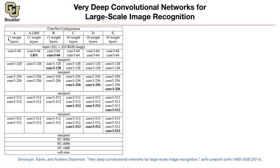They started with 11 layers — that's configuration A. The input is going to be a 224x224 RGB image, so the dimension of your input x is 224x224x3. Then you apply a 3x3 convolution and the number of channels changes from 3 to 64. Then the number of channels increases to 128, then 256, then 512, and finally max pooling, fully connected layers, and softmax.